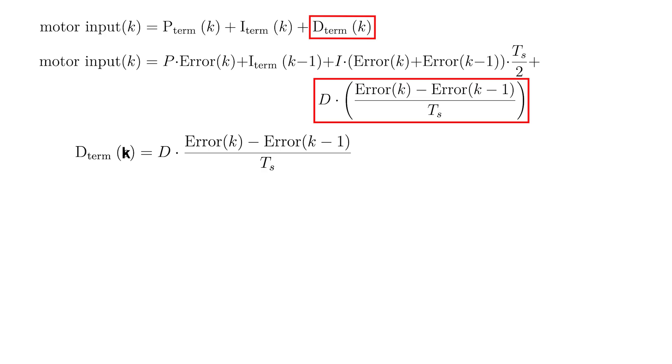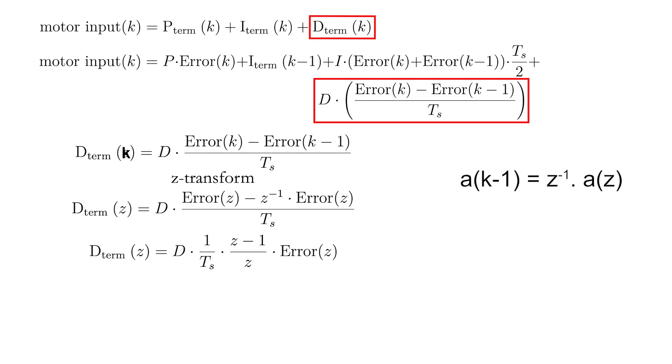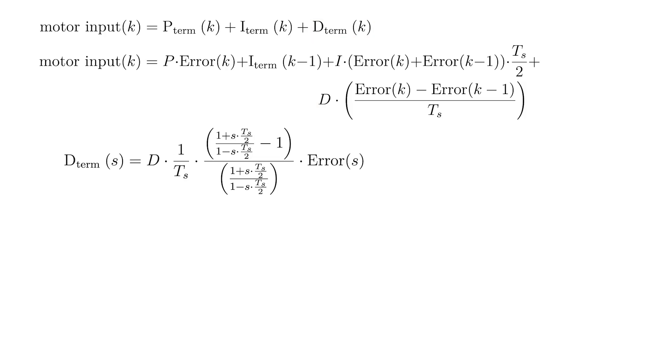Rewrite the equation a bit before proceeding with the bilinear or Tustin transform. Once again, you get a very complicated looking equation, which can be simplified a lot by rearranging the terms in the numerator and the denominator.